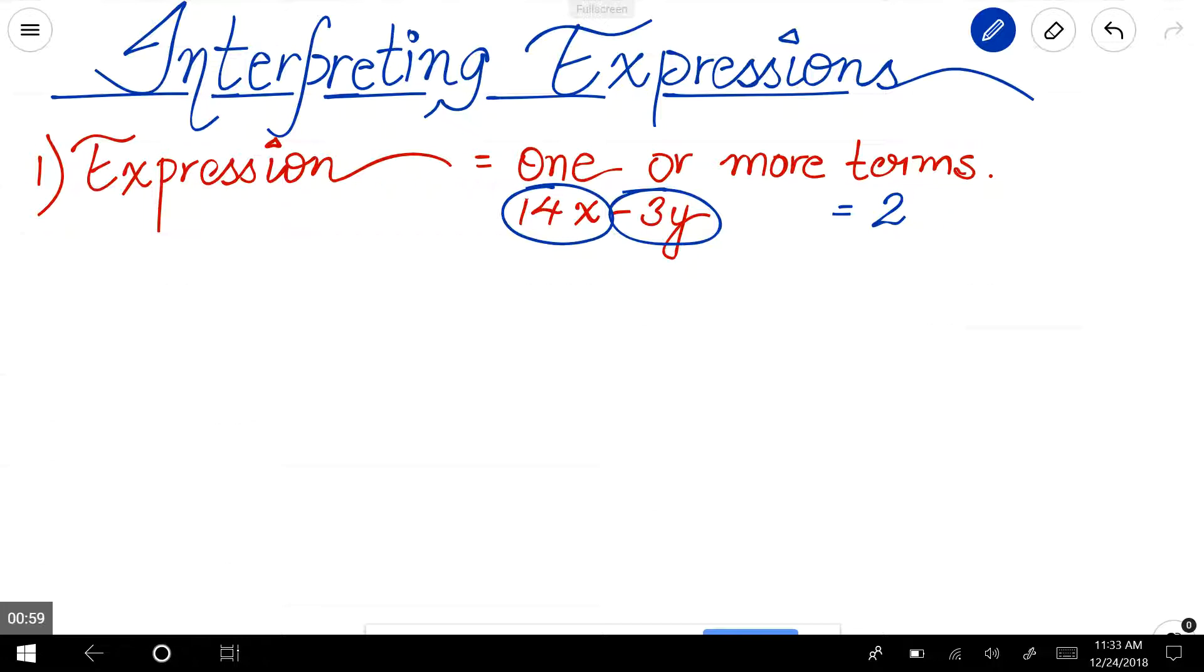Alright, the next definition is constant. Constant is basically something that doesn't change. It's not a variable. The value of a constant never changes. For example, a constant will be just a number and it does not have any variables.